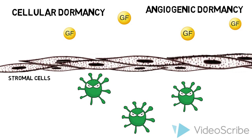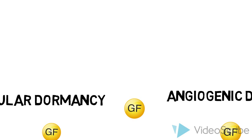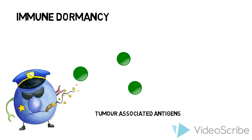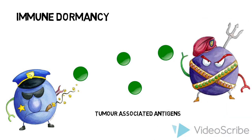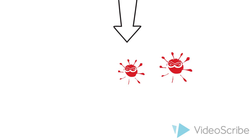Secondly, in angiogenic dormancy, stromal cells prevent the angiogenesis required for tumor cell growth, causing tumor cells to undergo apoptosis. Finally, there is immune dormancy, where apoptotic tumor cells release tumor-associated antigens that activate NK and CD8 T cells to cause further tumor cell death. However, genetically unstable tumor clones produce resistant clones that are able to grow and survive against immune destruction.